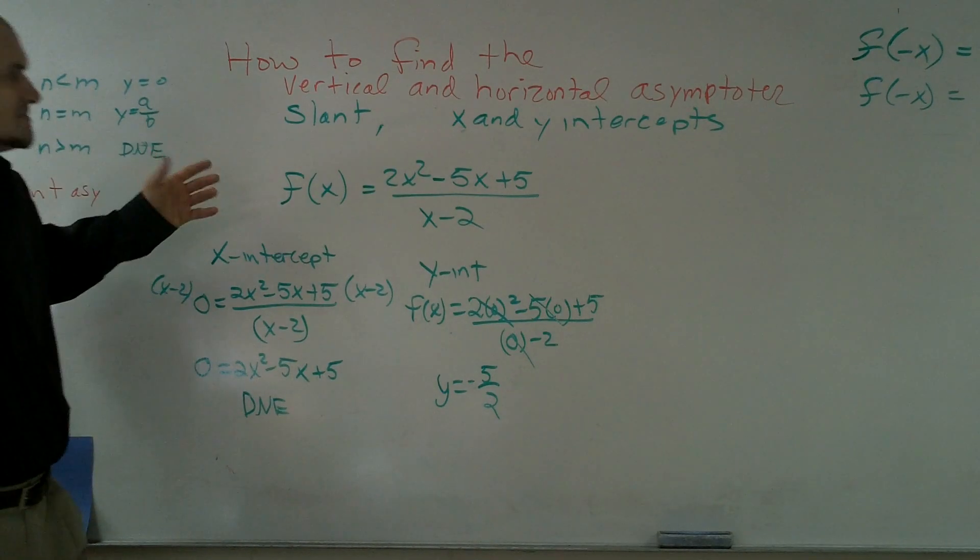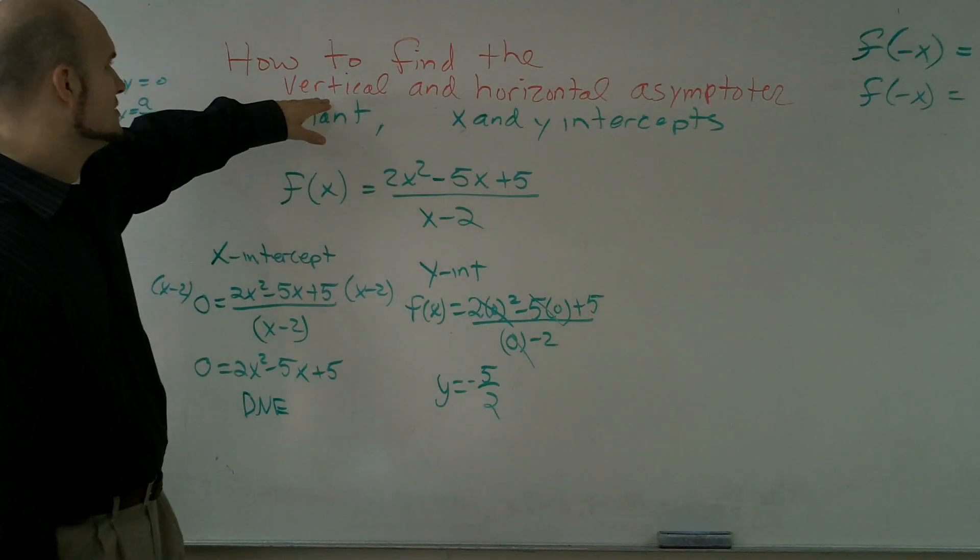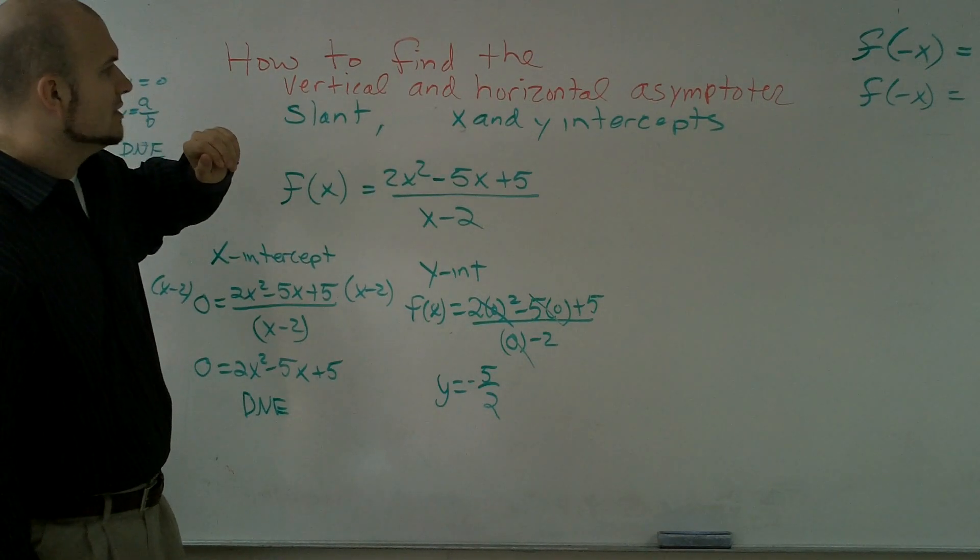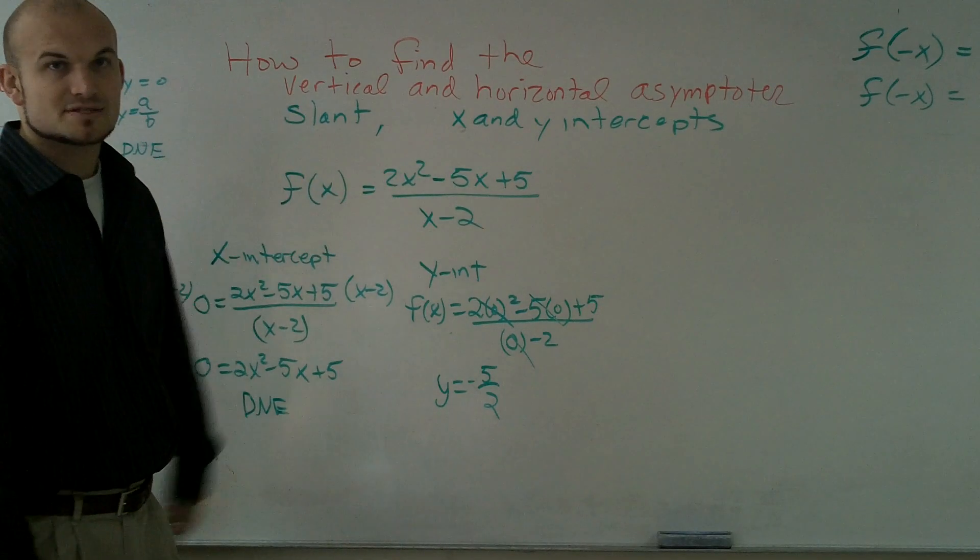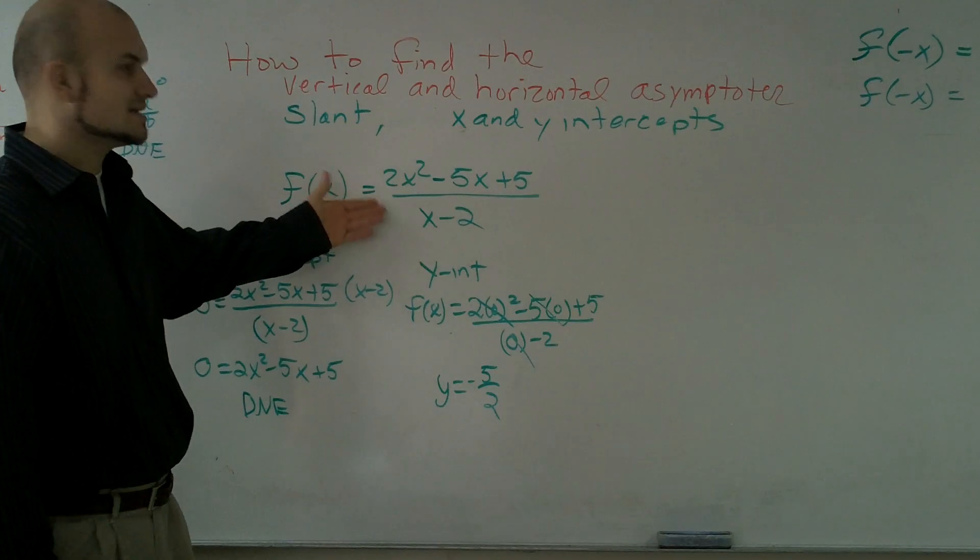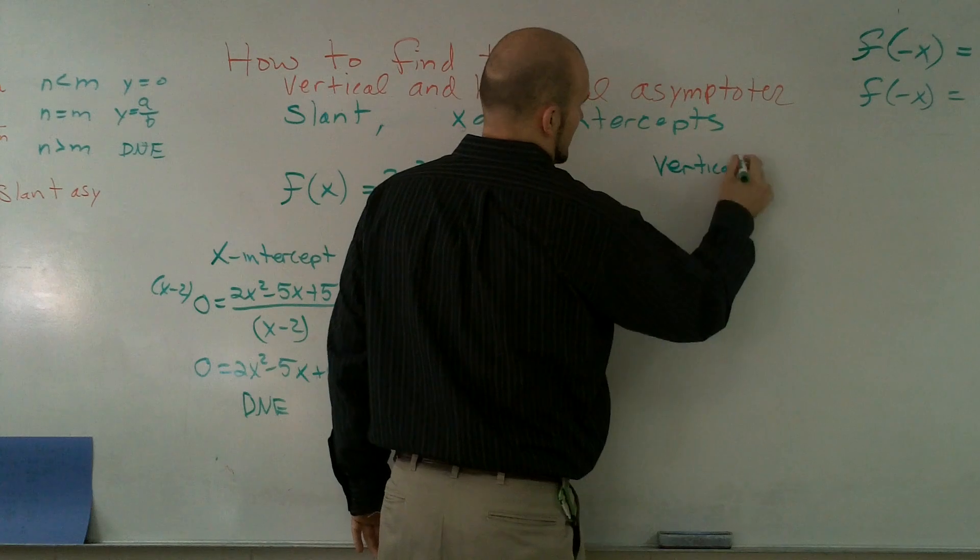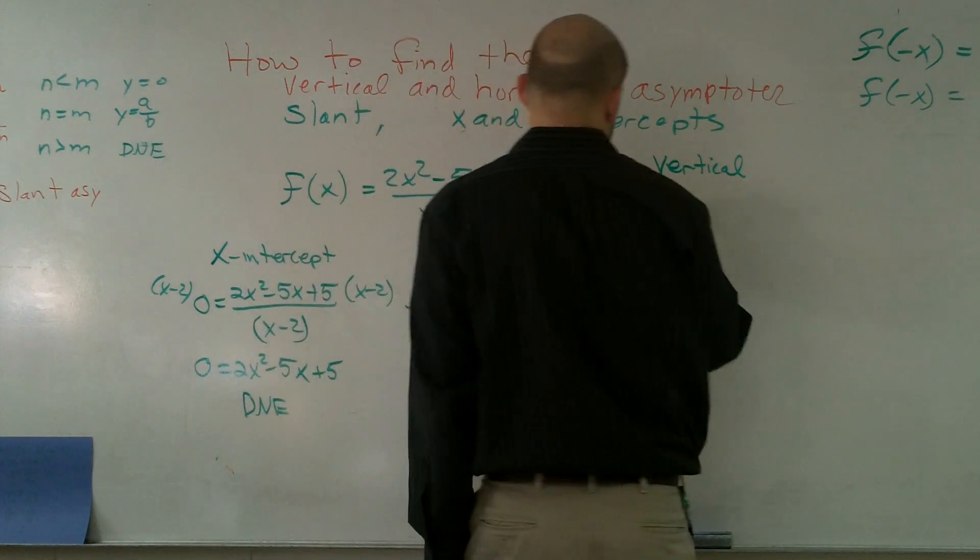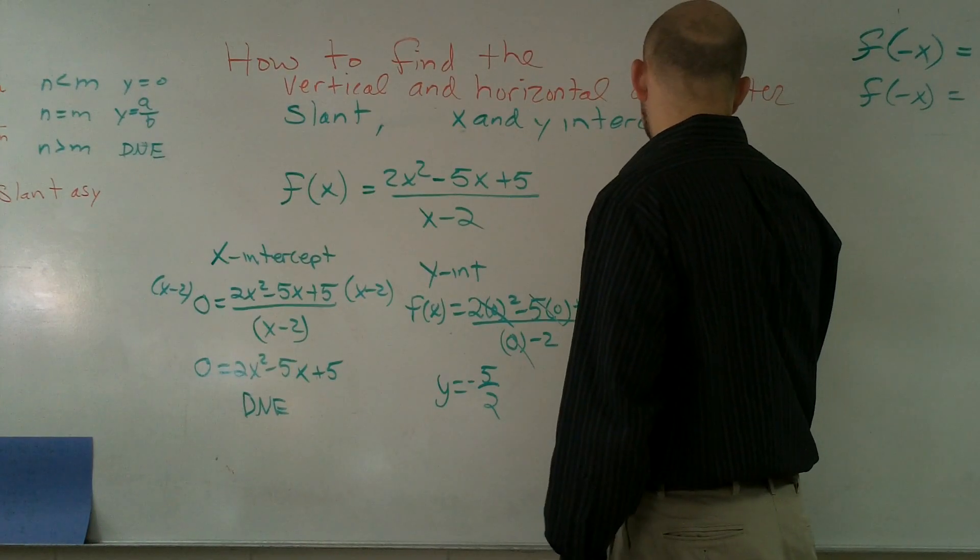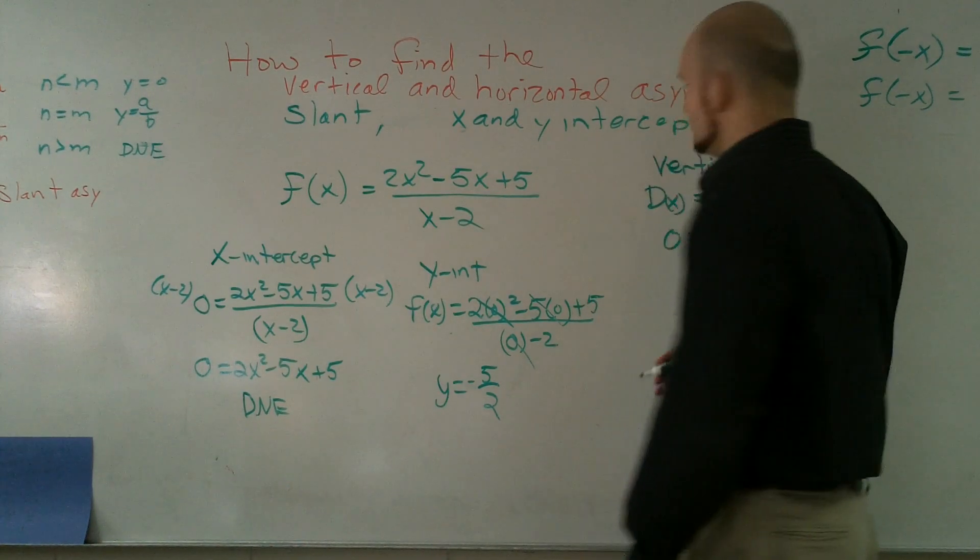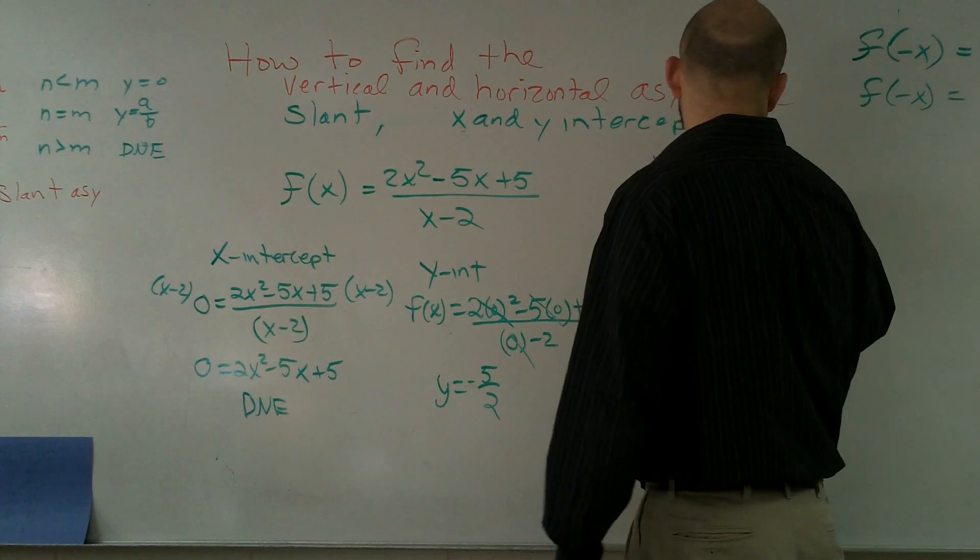So now let's look at our asymptotes. We can only have a slant or horizontal. If I look at my vertical, the first thing I need to look at is what's going to be the zeros on my d of x. To find the vertical asymptote, my denominator polynomial has to equal 0. So I say 0 is equal to x minus 2. This makes it pretty easy. It's going to be x equals 2 for my vertical asymptote.